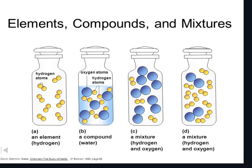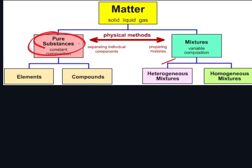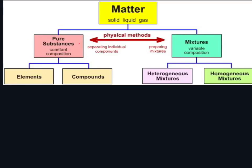So elements, compounds, and mixtures — how do you find them? Well, matter: we know everything is made up of matter, right? Matter is made up of solids, liquids, and gases. These can be classified further into pure substances and mixtures.